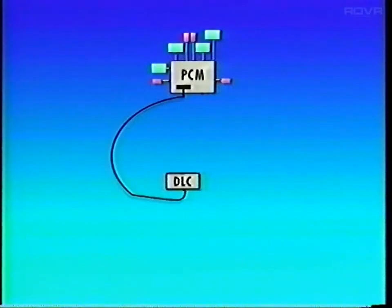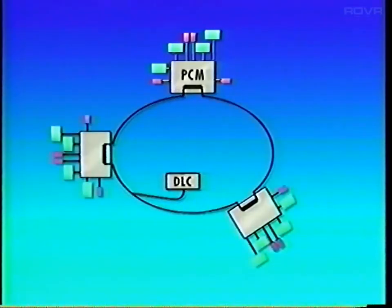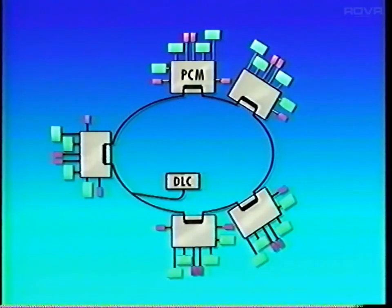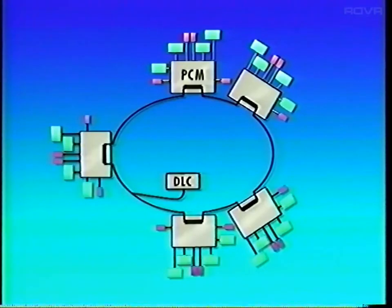So, as square waves, the PCM sends to the DLC information about its system. And when the line is extended to include other modules, they may communicate with the DLC too. In early years, this circuit was used almost exclusively for diagnosis. But more recently, as vehicles began to incorporate additional modules that could benefit from talking to each other, it's been used increasingly for system operation.